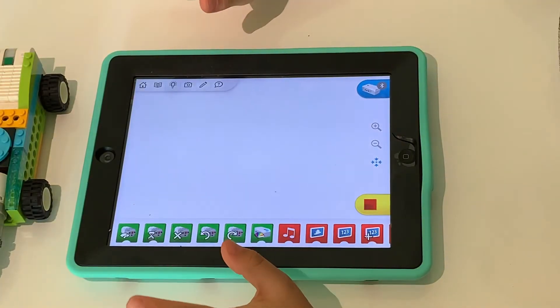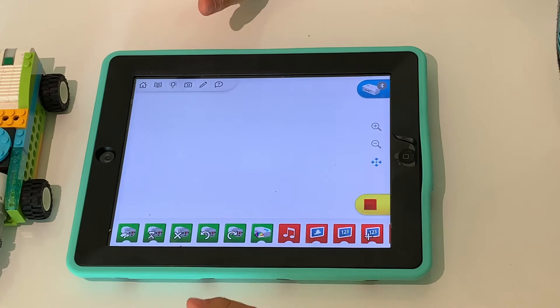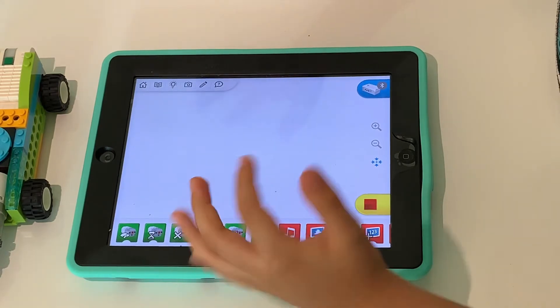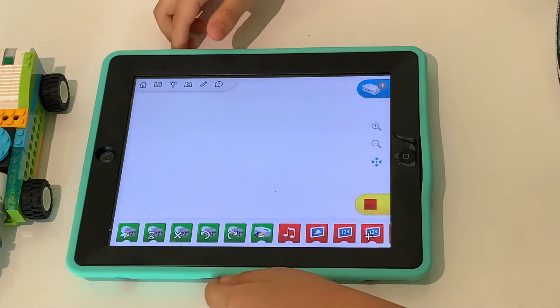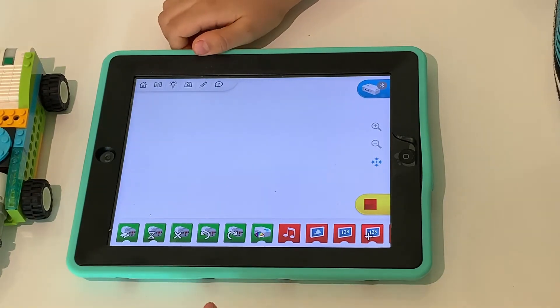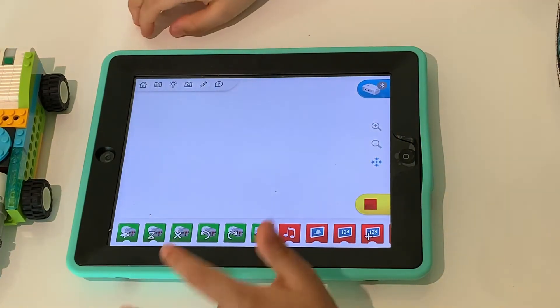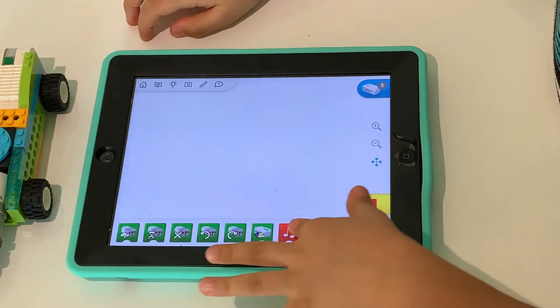Now, I'm going to show you how to build the program. But first, you have to ask your parents to help you download the app called Lego WeDo 2.0. When that is finished, get this screen up. And now, I'm going to show you how to build the program.